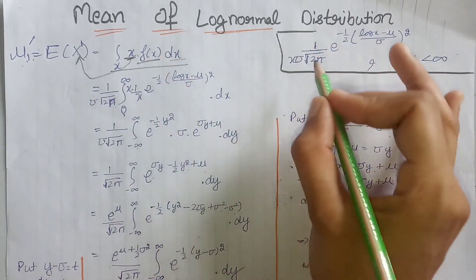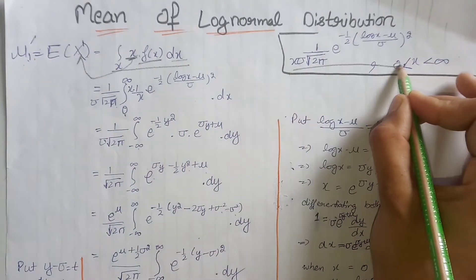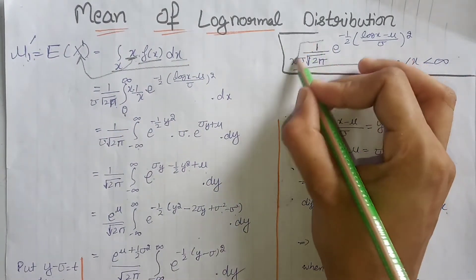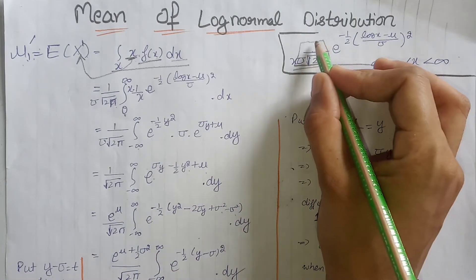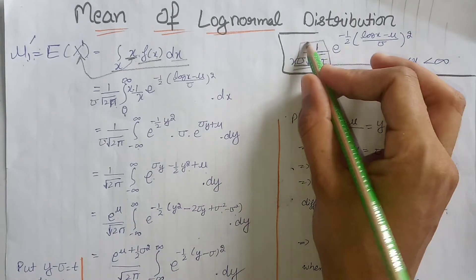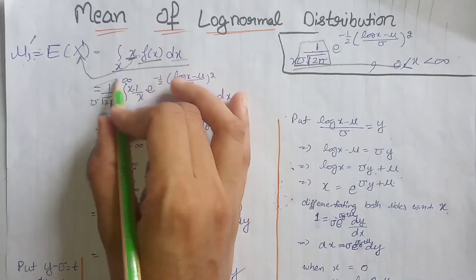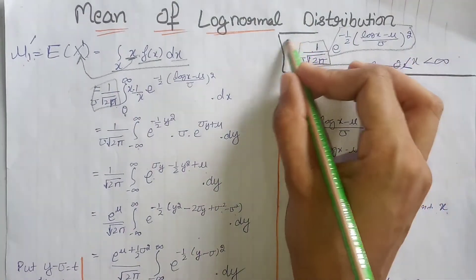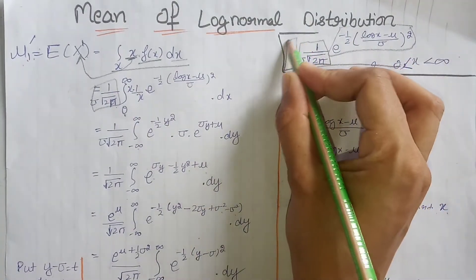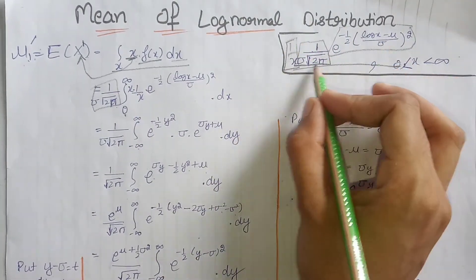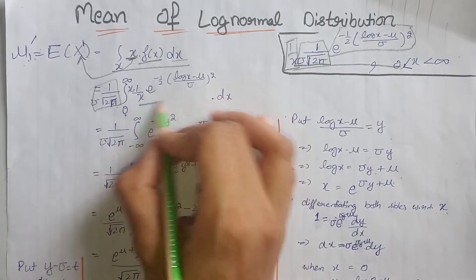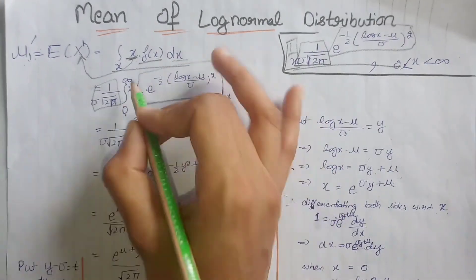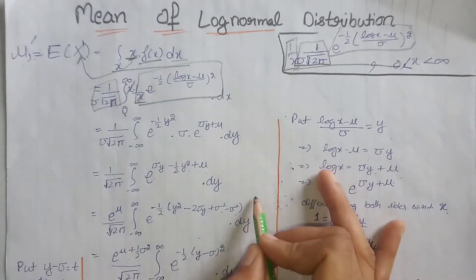The PDF of the log-normal distribution is known. The constant term is written outside the integral, and the remaining terms containing the variable x are written inside the integral. Then x in the numerator is cancelled by x from the PDF denominator.